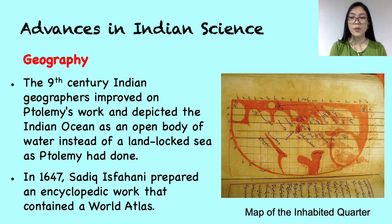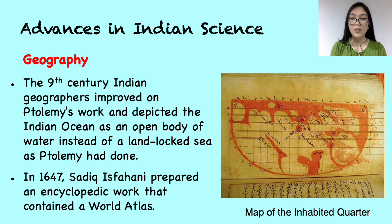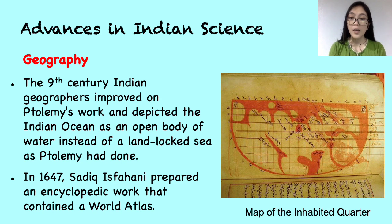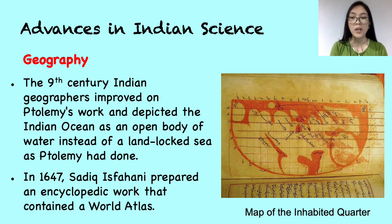Geography was also another science that had significant improvement. 19th century Indian geographers improved on Ptolemy's work and depicted the Indian Ocean as an open body of water instead of a landlocked sea, as Ptolemy had done. Astrolabes also helped determine more accurate latitudes. Big advances were also made in the field of cartography when, in 1647, Sadik Isfahani prepared an encyclopedic work that contained a world atlas. The maps he prepared, like the one in the slide, were fairly accurate, and he had also indicated physical features — for example, mountain ranges by wavy lines — and used various colors to mark rivers and oceans.